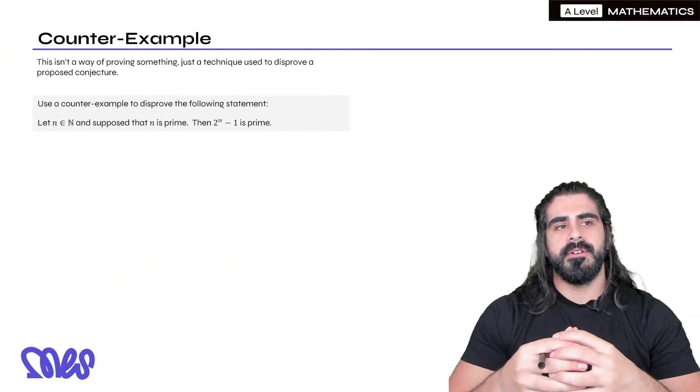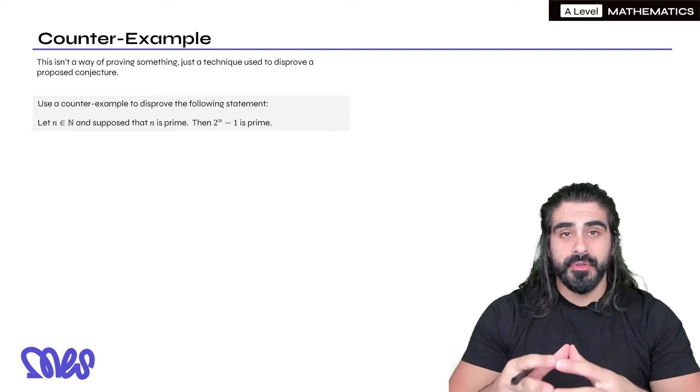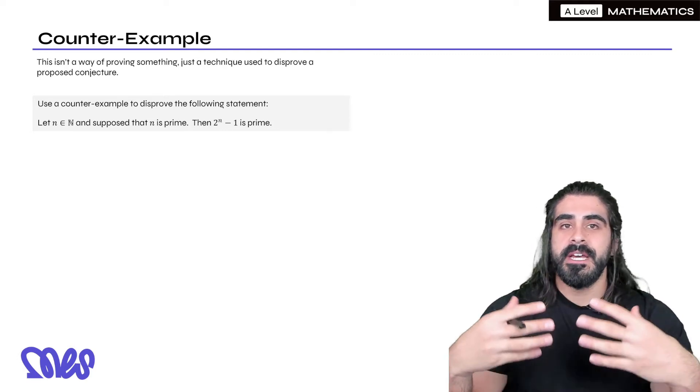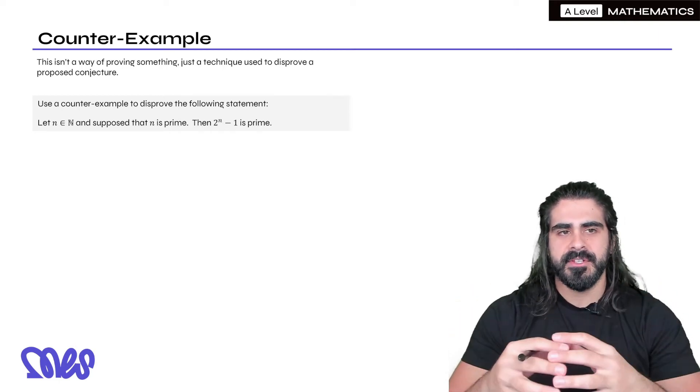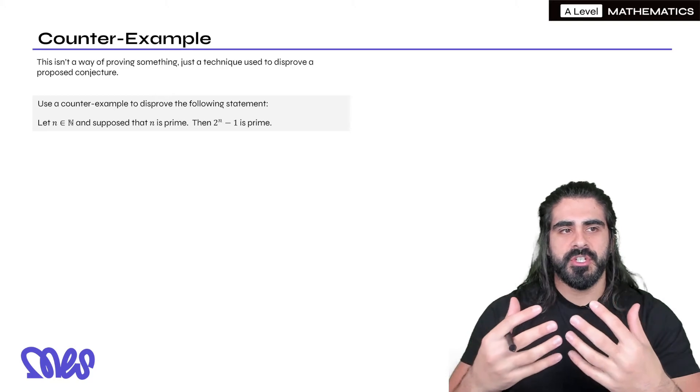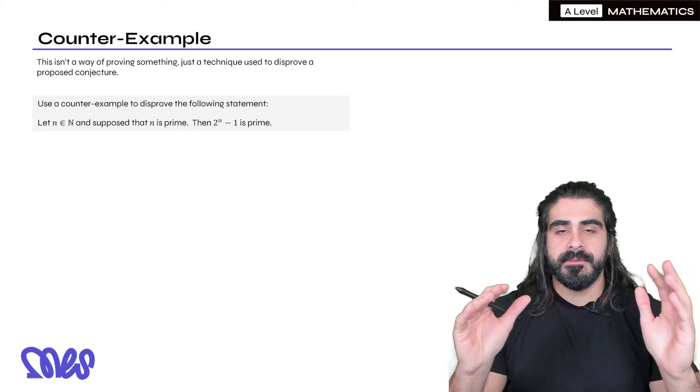Another one that you need to know about is known as counter examples. Now this isn't really a way of proving something, it's just a technique we use to disprove a proposed conjecture. Because generally in maths, if someone comes up with a conjecture and you can find one example where it's not true, you've just disproved the whole thing.